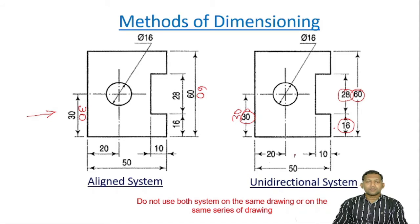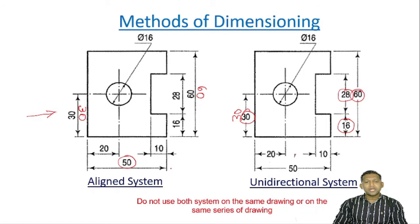In the unidirectional system, we write all values horizontally only. So these are the three differences: first, there will be no break in the dimension line in the aligned system, whereas in unidirectional it has a break in the middle. Second, in aligned system the dimensional value always goes on top of the dimension line.